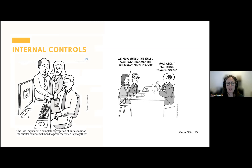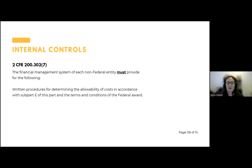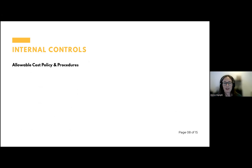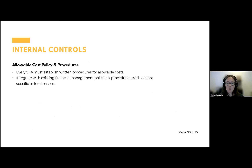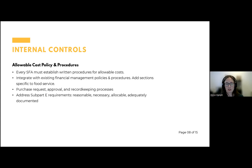A lot of times internal controls go back to the SFA level — your district has internal controls, and the question is whether you're implementing those within the food service department. Federal regulations require that an SFA has written procedures for determining the allowability of costs in accordance with allowable cost regulations and the conditions of the federal award. The big thing is you need an allowable cost policy and procedures — written procedures for allowable costs — integrated with your existing financial management policies and procedures. They need to identify purchase requests, approval, recording, and record-keeping processes, and address the subpart E requirements: all costs must be reasonable, necessary, allocable, and adequately documented.